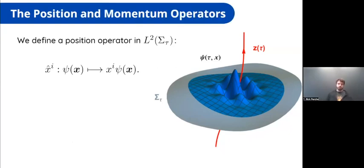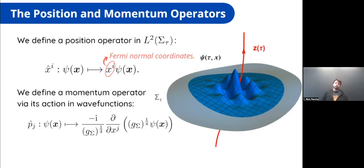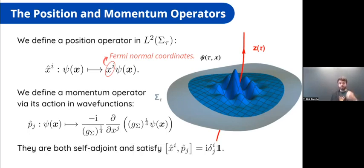The next step is to define a position operator whose components act on the wave function by multiplication by the Fermi normal coordinates. We choose this because the Fermi normal coordinates have a physical meaning associated with distance and direction. The momentum operator acts as differentiation, taking into account the curvature of spacetime. These X and P operators are both self-adjoint with respect to the inner product defined on the surfaces, and they satisfy the canonical commutation relations, defining the kinematics of the theory.